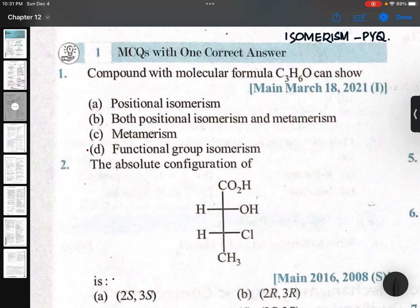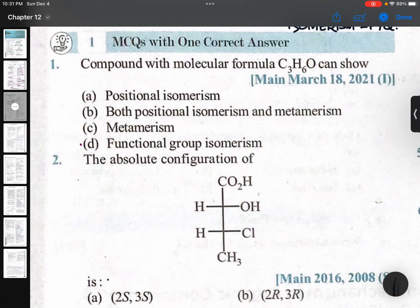Previous year's questions JEE Main and Advanced. Isomerism, organic isomerism. Let us see what type of questions are present. 2021 is given here, that means 2022 no questions are there. I am giving you questions up to 2022.